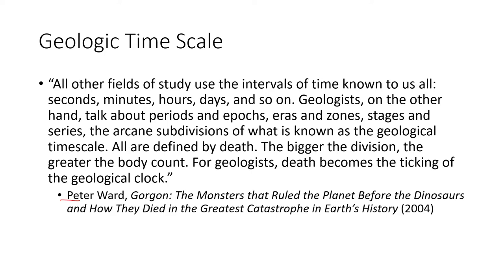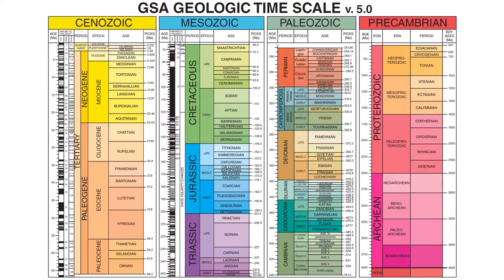Starting with a quote from Dr. Peter Ward's book 'Gorgon,' about the end-Permian mass extinction: 'All other fields of study use the intervals of time known to us all — seconds, minutes, hours, days. Geologists talk about periods and epochs, eras and zones, stages and series — the arcane subdivisions of the geologic time scale. All are defined by death. The bigger the division, the greater the body count. For geologists, death becomes the ticking of the geological clock.' The geologic time scale has four eras: Cenozoic, Mesozoic, Paleozoic, and Precambrian.